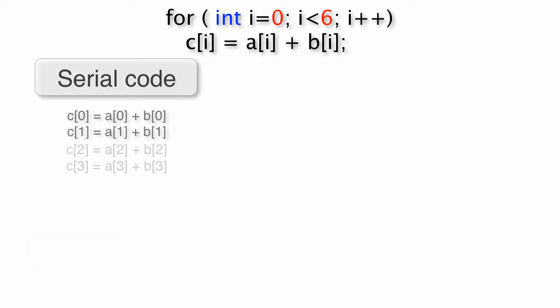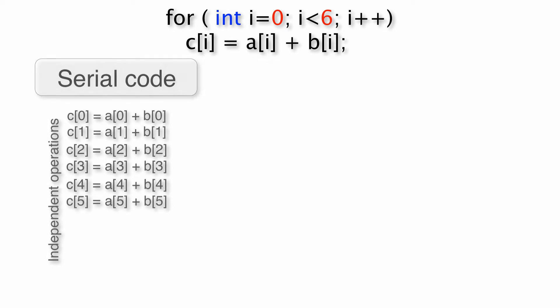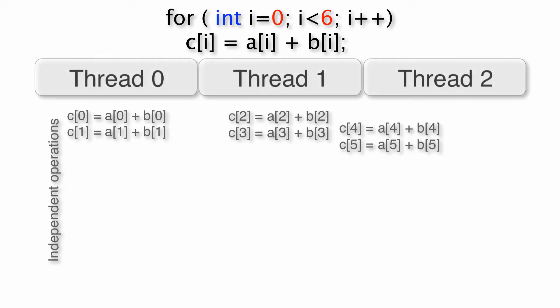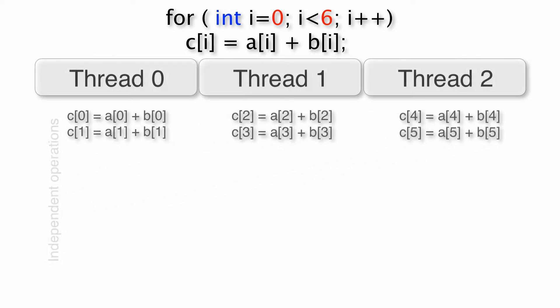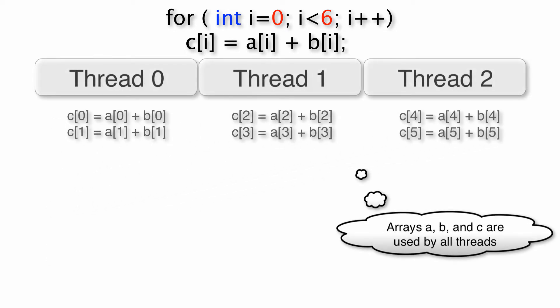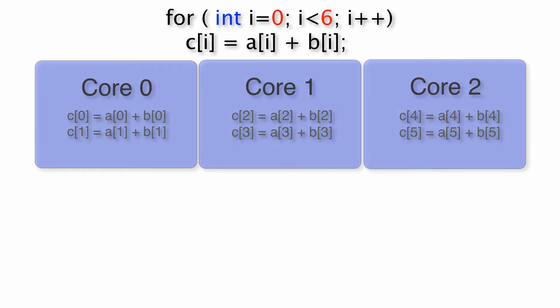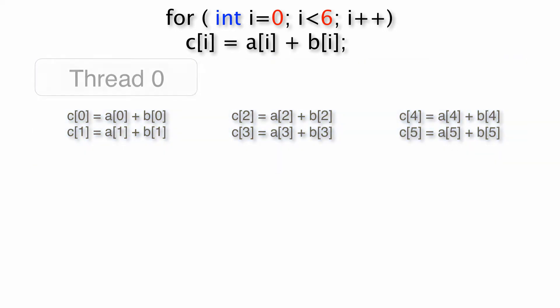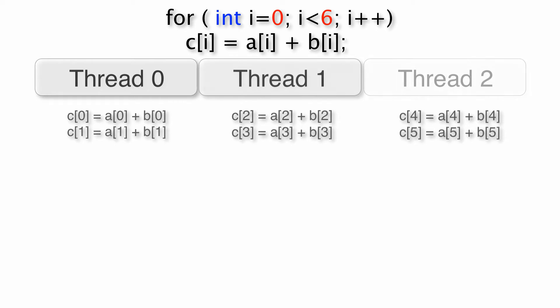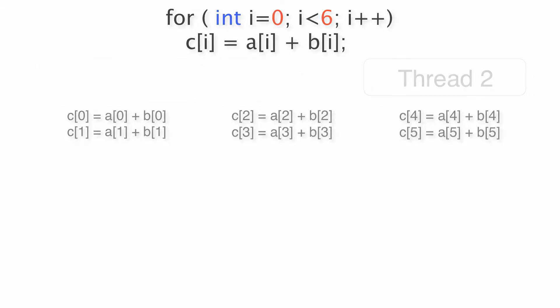In parallel programming, threads are serial sequences of instructions that are executed concurrently and share a part of the virtual memory address space. In high-performance computing, threads are typically used to utilize multiple cores in a processor or coprocessor. In order to launch threads and coordinate work between them, the programmer must use a parallel framework, which is a set of language constructs and a runtime library that manages threads.